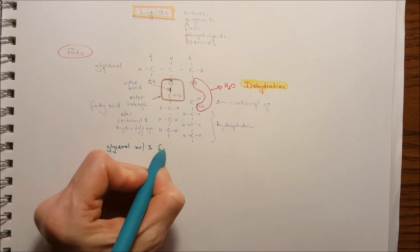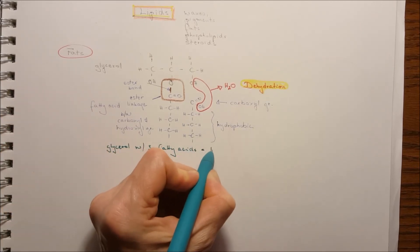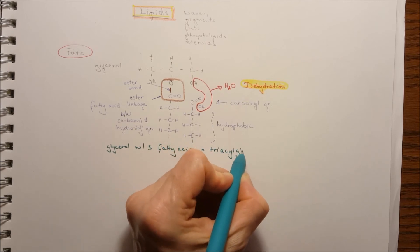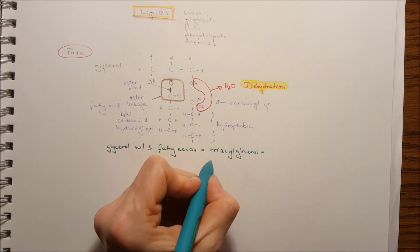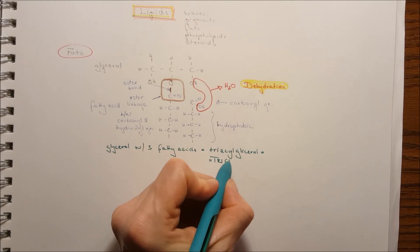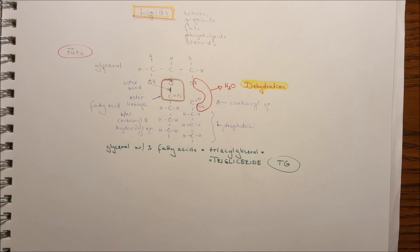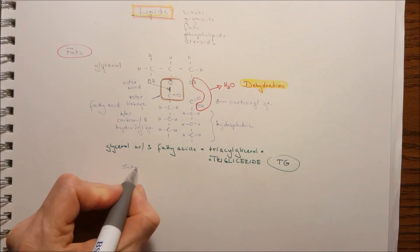So the glycerol with three fatty acids is called the triacylglycerol. And it's a shorter way to say it's triglyceride. This is the TG value, what the doctors usually check in your blood during annual checkup.